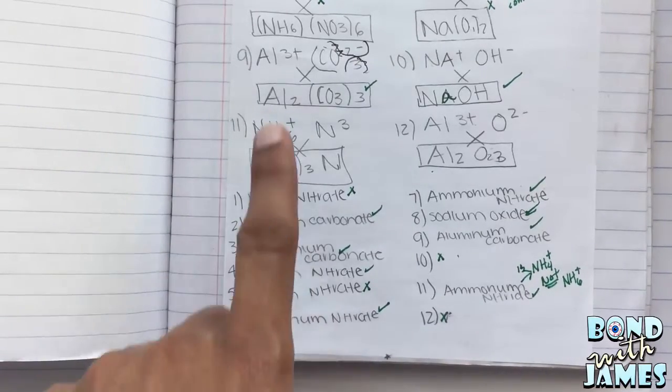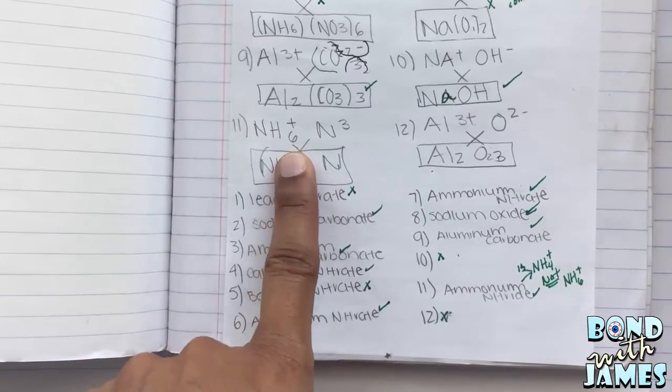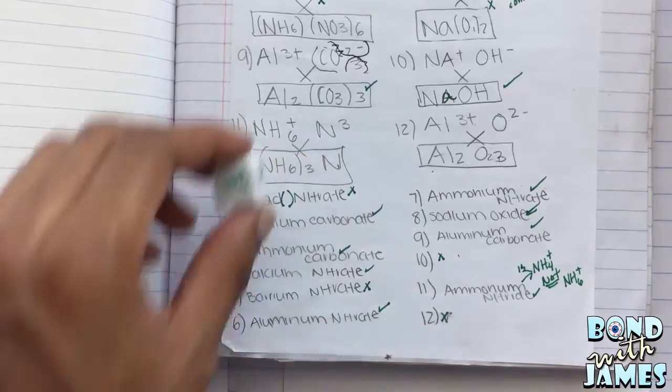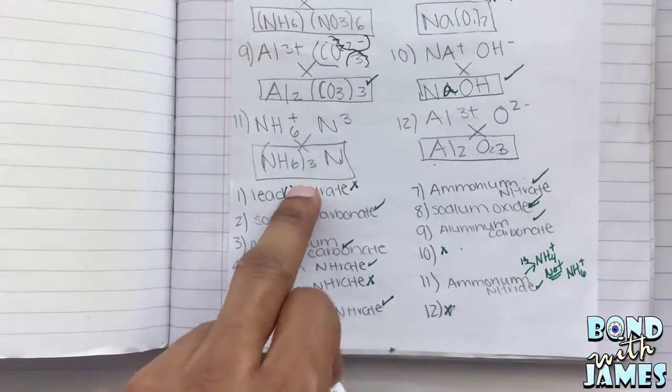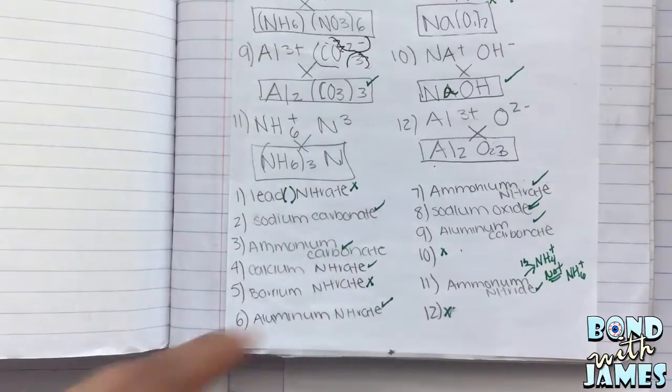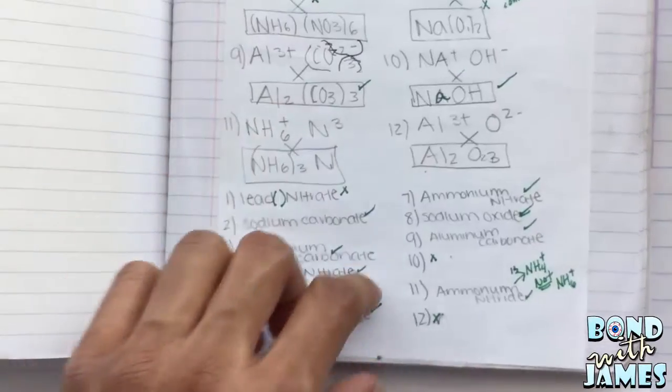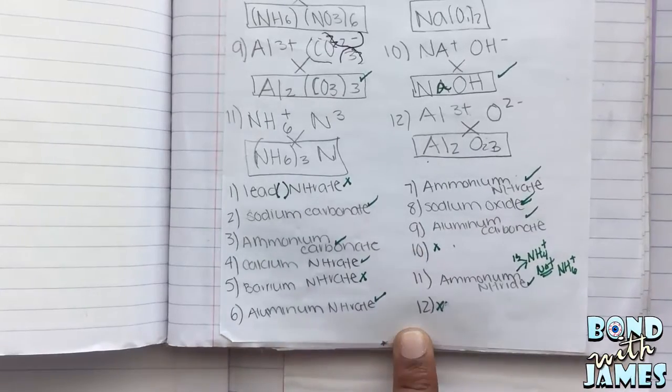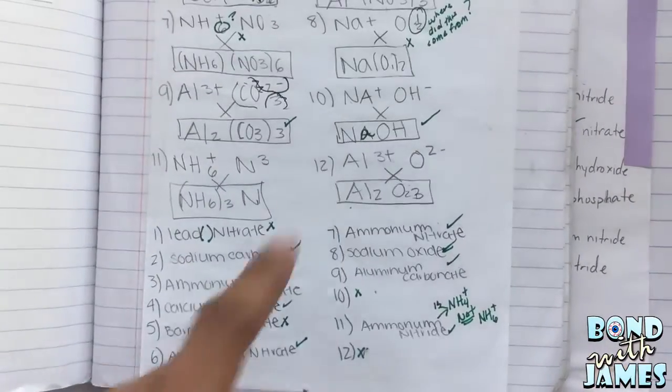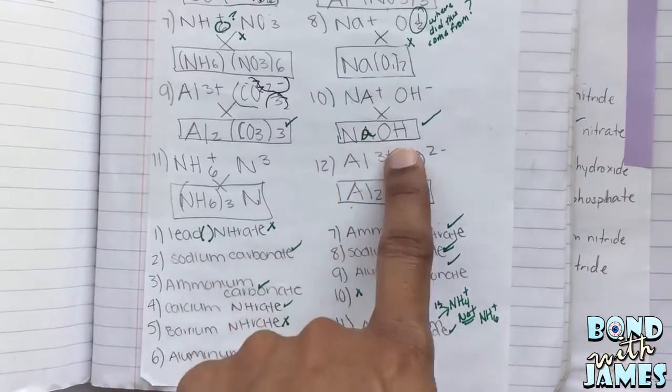So there were actually a couple mistakes on this particular student because I don't even know where they got that 6 from because ammonium, NH4, and the student wrote NH6. So I don't know where they got that from. But here they left number 10 and 12 blank, but here they wrote a formula for it.